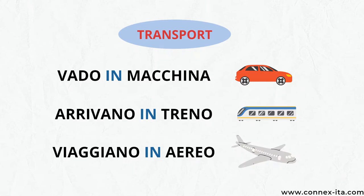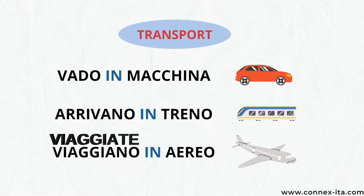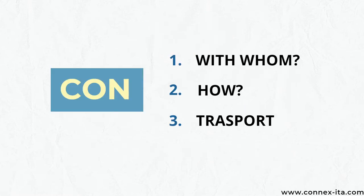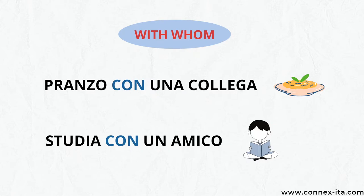You can also use 'in' before the means of transport that you are getting to reach a place. If you want to improve your Italian vocabulary, check out my lesson on transports — I'll leave you the link in the description below. The next preposition, 'con', can tell you with whom or how you are doing something, but also how you are getting to a place. For instance, 'Pranzo con una collega' — I'm having lunch with a work colleague. 'Studia con un amico' — he's studying with a friend.